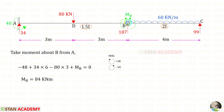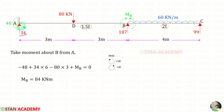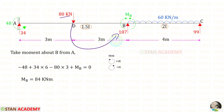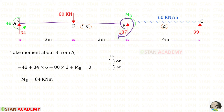Now taking moments about B from A to find MB, assuming MB is a hogging moment: MA acts anti-clockwise (negative), RA acts clockwise over a distance of 6 (positive), the point load acts anti-clockwise over a distance of 3 (negative). We get a positive value for MB, confirming our assumption — MB is a hogging moment.